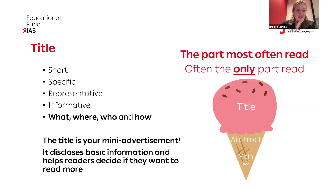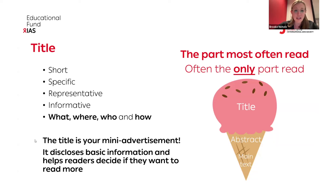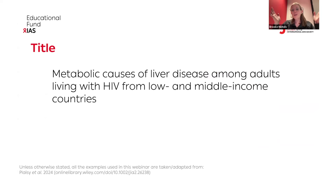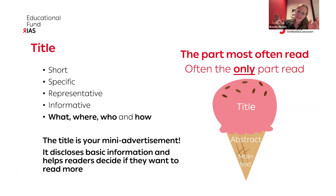It is essential that you really think about your title, because if it's going to be the only thing some people read, you want to make sure it accurately represents what your study is about. But it must also be short, very specific, representative of all the work that went into the manuscript, be informative, and give you the what, where, who, and how. It is absolutely your mini advertisement for your paper. It also really helps people doing systematic reviews triage your paper — they might look at the title first, then perhaps the abstract.